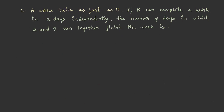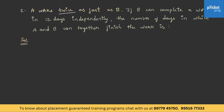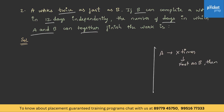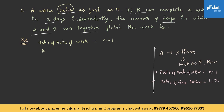Let us solve another question. A works twice as fast as B. If B can complete a work in 12 days independently, the number of days in which A and B can together finish the work is. From the formula, if A is x times as fast as B, the ratio of rate of working will be x is to 1 and ratio of time taken will be 1 is to x. Since A works twice as fast as B, ratio of rate of work will be 2 is to 1 and ratio of time taken will be 1 is to 2. B can complete the work in 12 days.